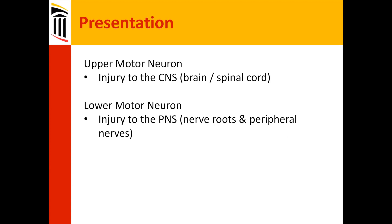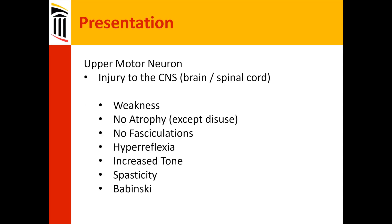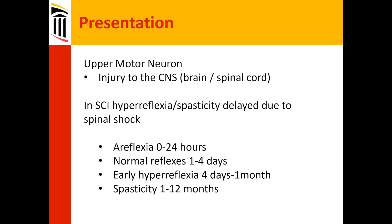Upper motor neuron injury is injury to the CNS — the brain and spinal cord. Lower motor neuron injury is to the peripheral nervous system, the roots and peripheral nerves. Injury to an upper motor neuron presents as weakness, no atrophy except from disuse, no fasciculations, hyperreflexia, increased tone, spasticity, and a Babinski sign. In spinal cord injury, hyperreflexia and spasticity are delayed due to spinal shock — patients have areflexia when first seen, normal reflexes recover around 24 hours, followed by early hyperreflexia and spasticity developing later.